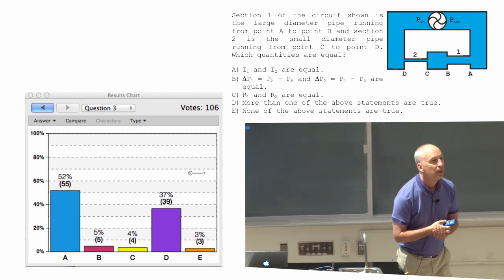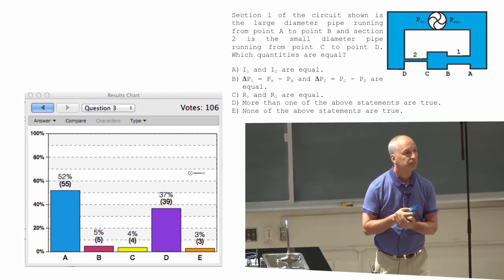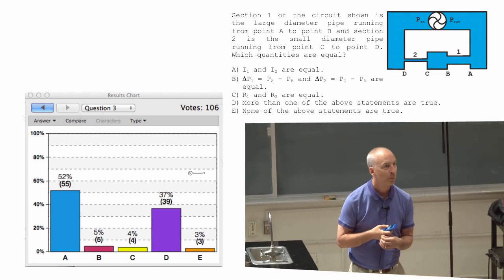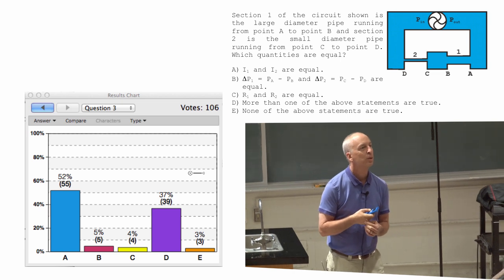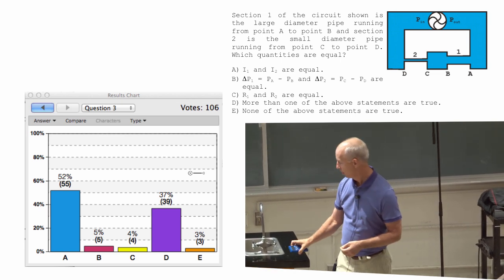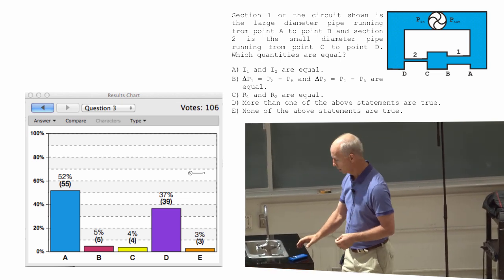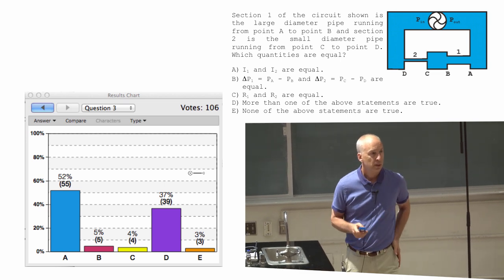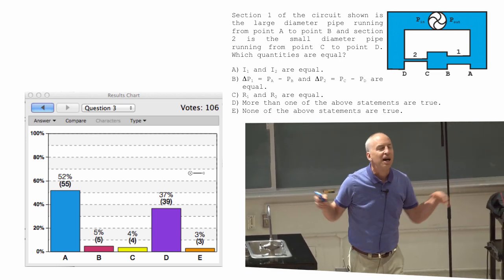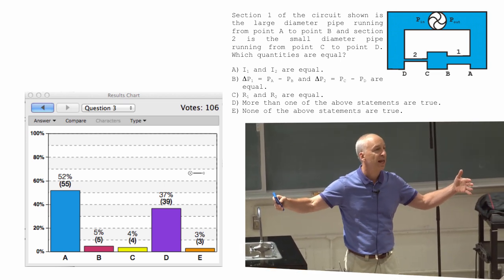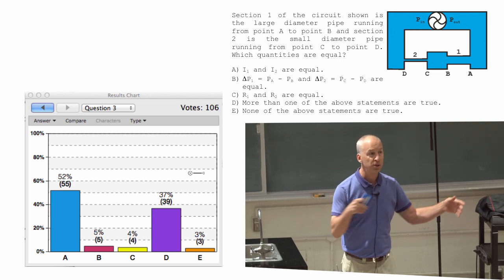So if the pipe is like twice as long, or 1 is twice as wide as 2, is that directly proportional to the difference in their Rs? Yeah, the resistance depends on the length. If it's twice as long, it's twice the resistance.